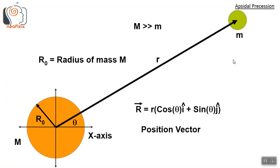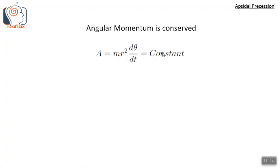This figure shows the variables used in the analysis. Small r is the distance between Earth and Sun, or Earth and Moon, and so on. Theta is the angular displacement. Capital R with an overhead arrow is the position vector. Capital M is the mass of the bigger object and small m is the mass of the smaller object revolving around the massive object. Angular momentum is conserved; capital A is the angular momentum, defined as m·r²·(dθ/dt), which is a constant determined by the initial conditions.